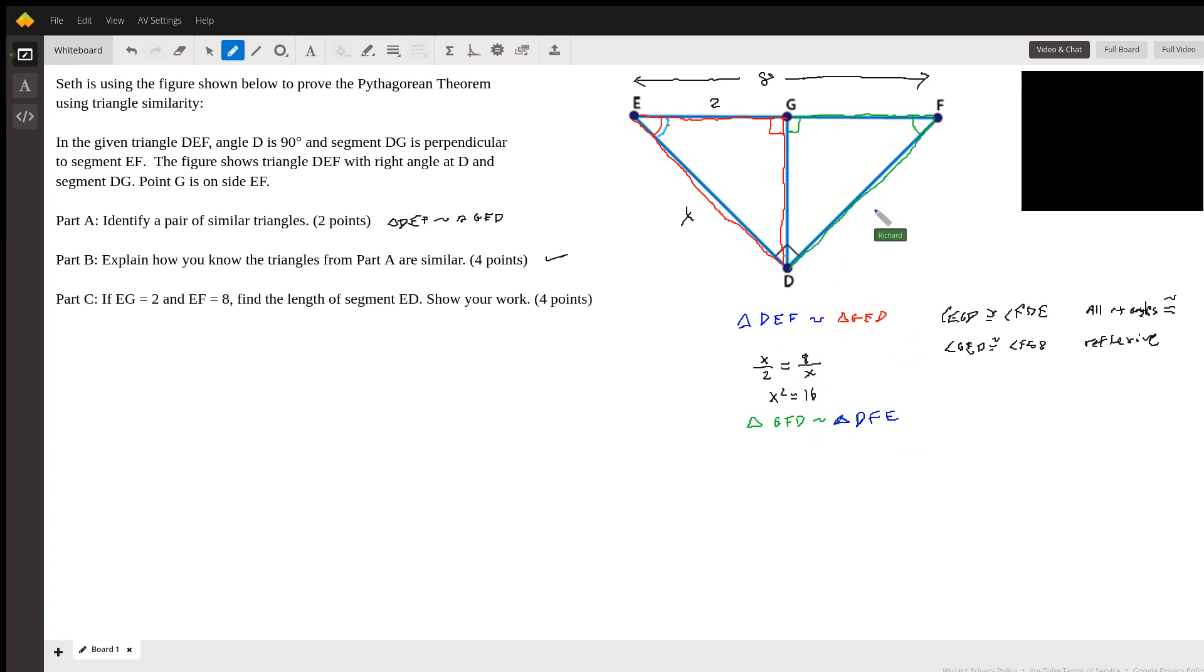Okay, so we'll call this Y here. So you can say that GF, which is 6, corresponds to DF, which is Y.